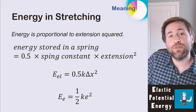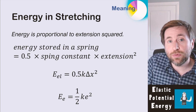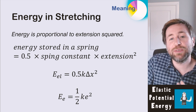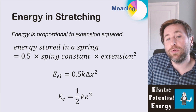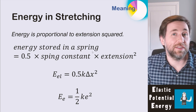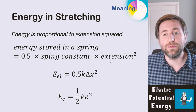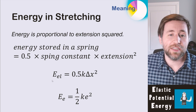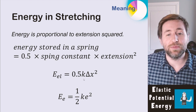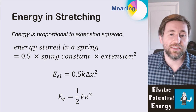Here's the equation — it's one you get given, you don't have to remember it. You can think about it as energy stored in stretching something, also called elastic strain energy or elastic potential energy. The key thing to remember is that energy is proportional to extension squared: if you double the extension, you get four times the elastic potential energy. Energy stored in a spring equals a half times the spring constant times the extension squared. I'll write it as E_EL equals 0.5 k delta x squared, where delta means change and x means length, so delta x together means extension.